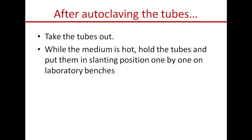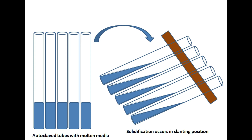After autoclaving, take the tubes out of the autoclave after the pressure goes down naturally. While the medium is still hot and molten, hold the tubes and put them in a slanting position one by one on a laboratory bench. Keep them in the slanting position to allow the media to solidify.